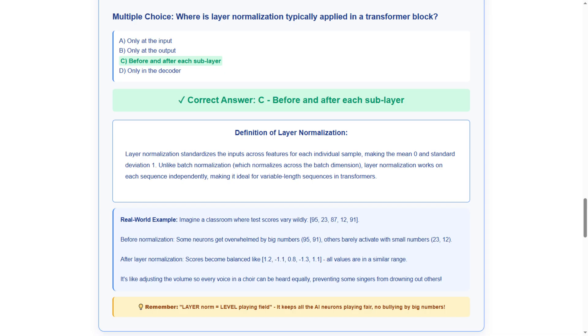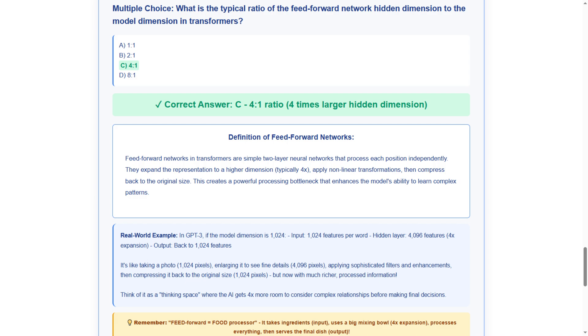Our real-time example demonstrates volume adjustment in a choir, ensuring every voice can be heard equally, preventing some singers from drowning out others. This shows balanced audio processing. The memory tip tells us layer norm equals level playing field. It keeps all AI neurons playing fair, with no bullying by big numbers. Remember, fair play enforcement.